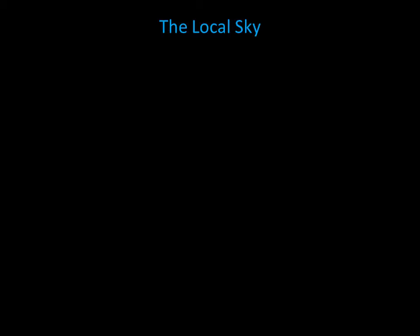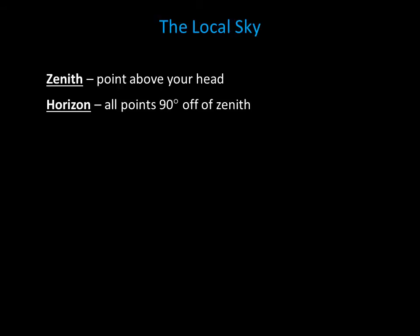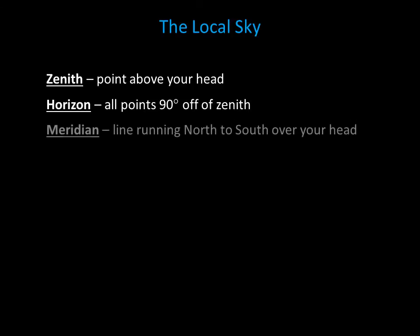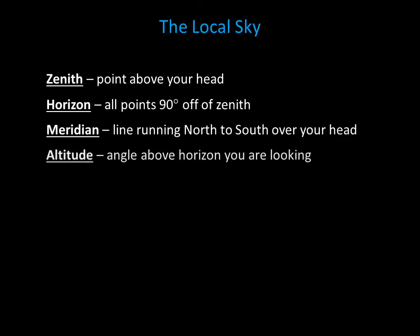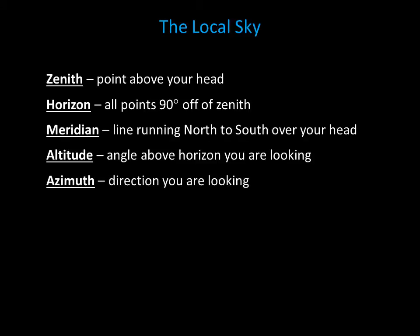Now let's define a few terms to talk about our local sky. It appears that we can see half of the celestial sphere from wherever we are. The point directly over our head is called the zenith. The horizon is the imaginary plane 90 degrees from the zenith, marking the boundary between Earth and sky. A meridian line runs north to south through the zenith. Your altitude is the angle you are looking at in the sky, and your azimuth is the direction you are looking — north, east, south, west, and anywhere in between.